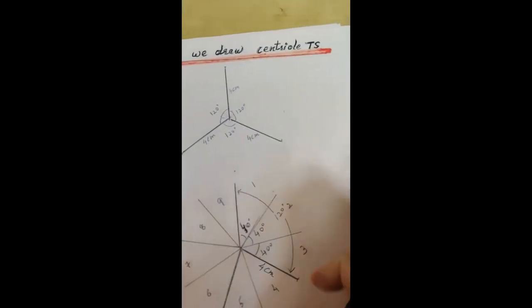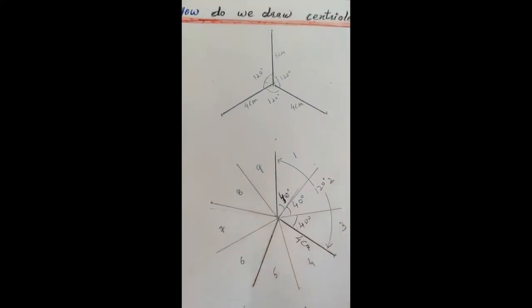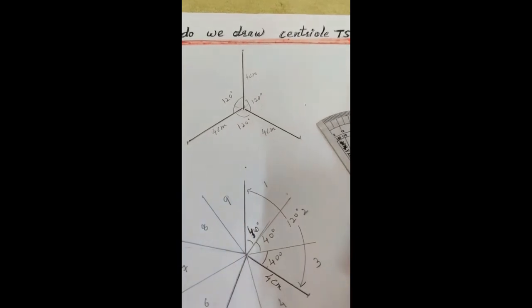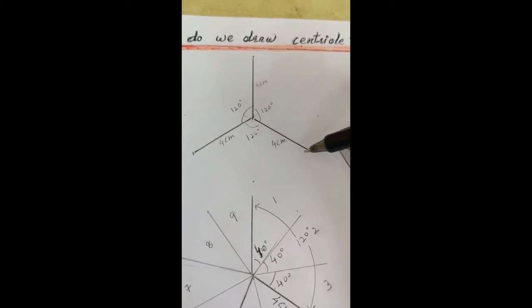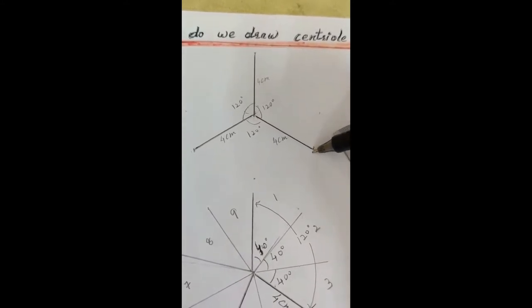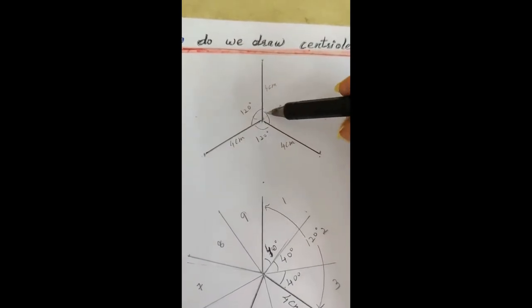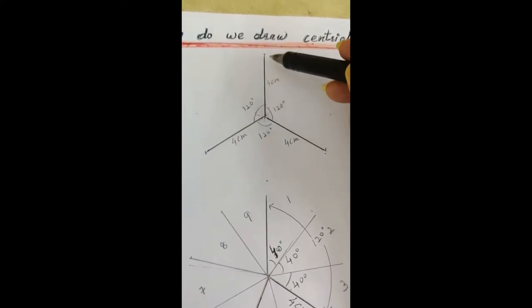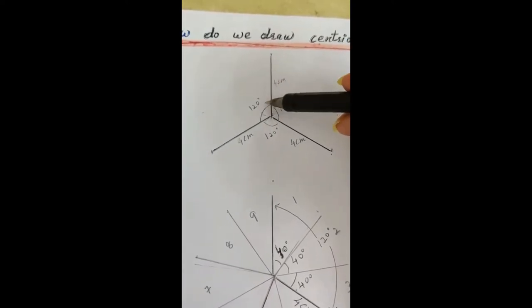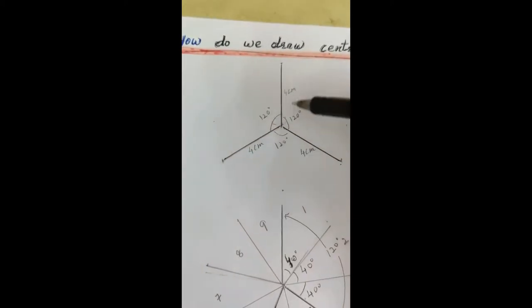So first of all we will need a scale, pencil, eraser. And what are you going to do? You will make one line of four centimeter and draw an angle of 120 degrees on it. So second line four centimeter, and similarly another line at 120 degrees.